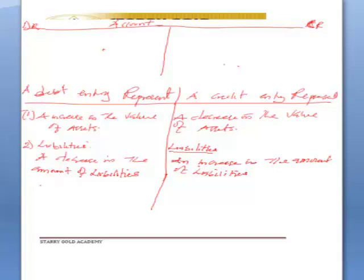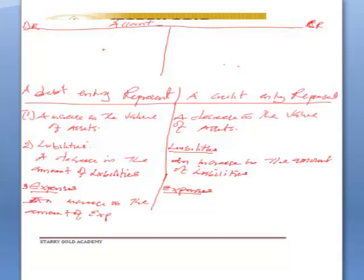For expenses: a debit entry means an increase in the amount of expenses, and a credit entry means a decrease in the amount of expenses.